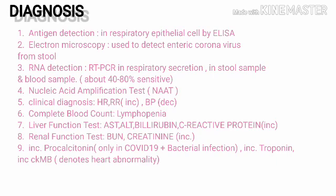Nucleic acid amplification test, also known as NAAT. Clinical diagnosis via measuring heart rate, respiratory rate, and blood pressure. Complete blood count (CBC): lymphopenia. Liver function test: elevated AST, ALT, bilirubin, and C-reactive protein. Renal function test: elevated BUN and creatinine. Increased procalcitonin is only seen in COVID-19 plus bacterial co-infection. Increased troponin and increased CKMB denote cardiac abnormality.